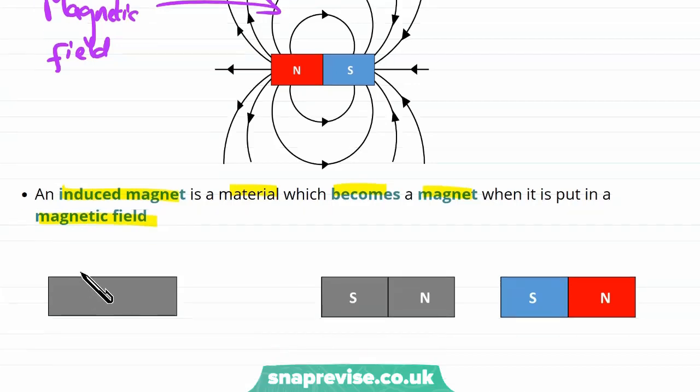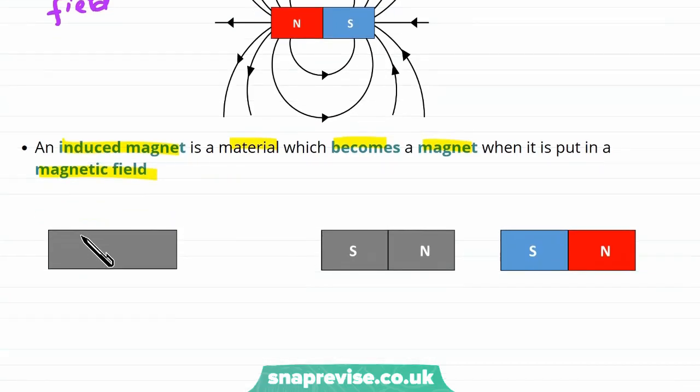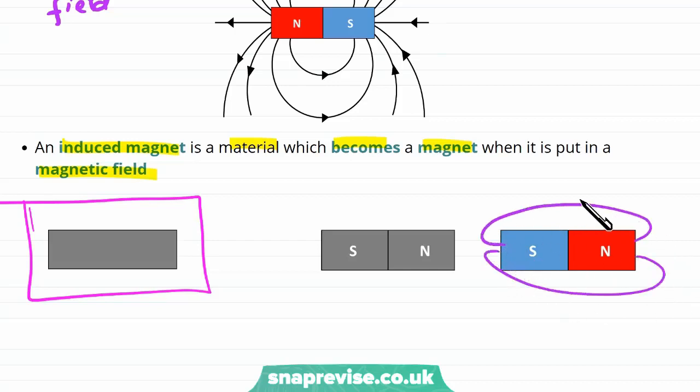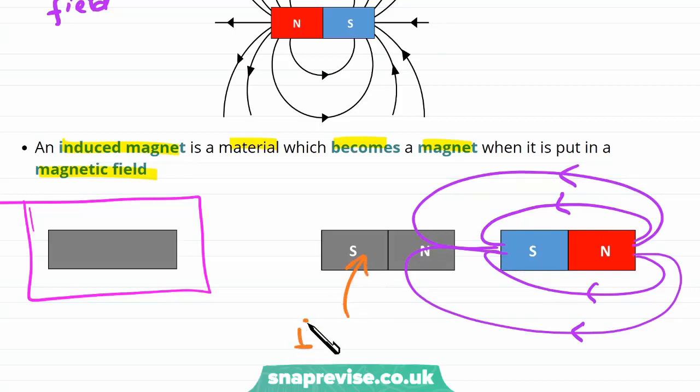So when an induced magnet is not in a magnetic field, it just seems like a normal everyday object. But then if we put it in a magnetic field, such as the magnetic field created by a bar magnet, then it will become a magnet. We call it an induced magnet.